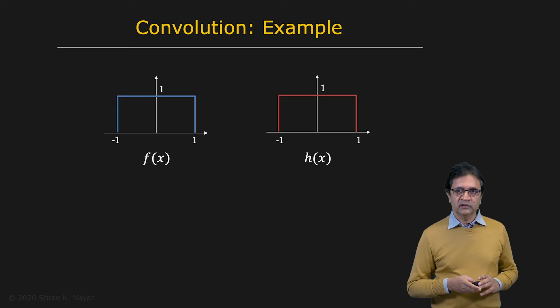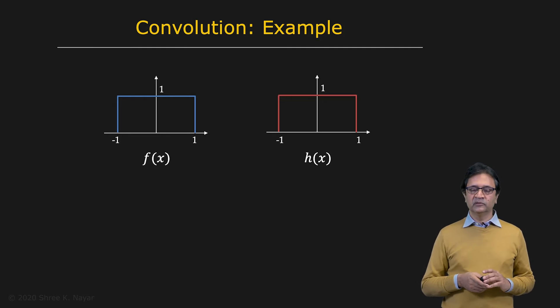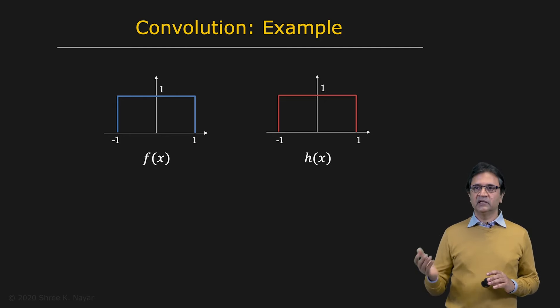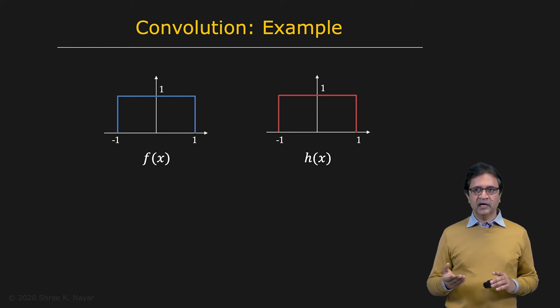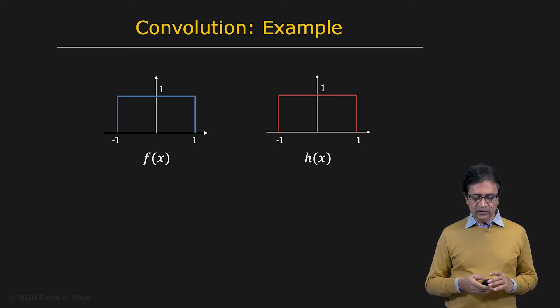Let's say you want to convolve the rectangular function — the blue rectangle on the left — with the red rectangle on the right. They happen to be, in this simple case, identical rectangles.